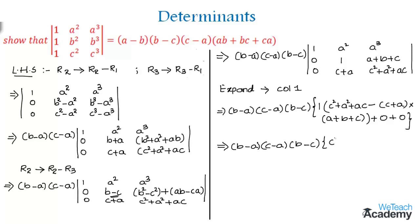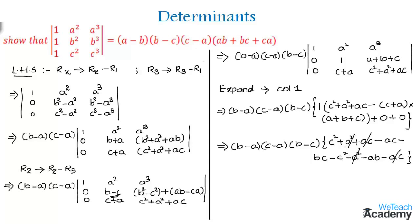We then get (C squared plus A squared plus AC) minus (C plus A)(A plus B plus C). Multiplying out, we get minus AC minus BC minus C squared, and then minus A squared minus AB minus AC. Cancelling terms with opposite signs, we are left with the remaining terms.